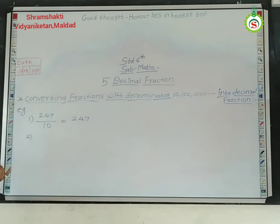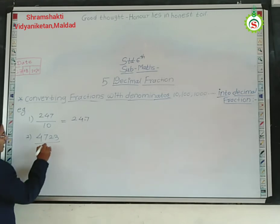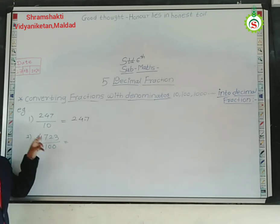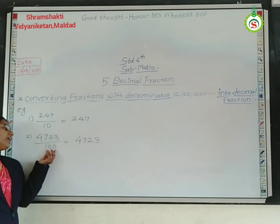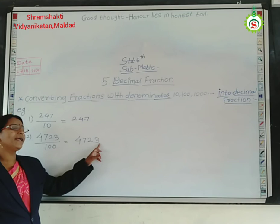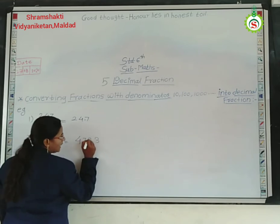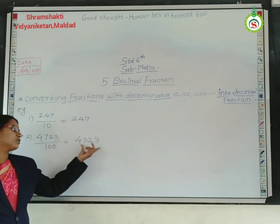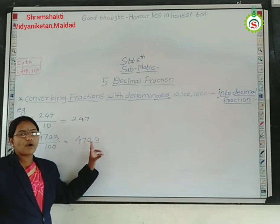Second example: 4,723 divided by 100. See this example carefully. Here the denominator is 100, so write down 4,723 as it is. How many zeros are there? Two zeros. So you have to leave two places from the units place — the units place and the tens place — and give the point in between 47 and 23. So we get 47.23.